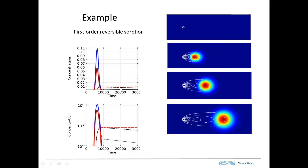The dashed line shows the concentration sorbed to the solid, which is increasing here. Because mass is being sorbed, the concentration in the fluid is less than in the baseline case — just simple conservation of mass. For the irreversible case, the fluid concentration drops off and the sorbed concentration stays at a low steady value. The red line would just keep going because the process is irreversible and doesn't change with time.